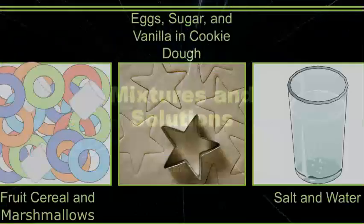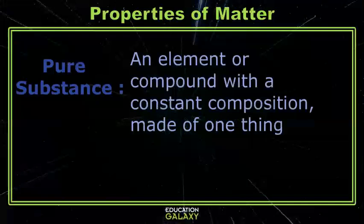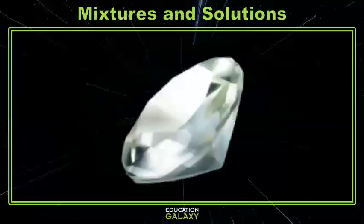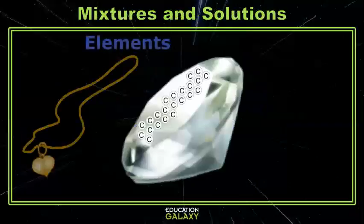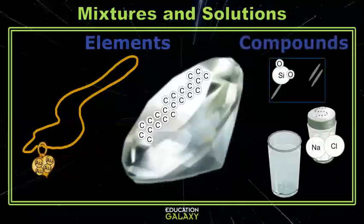Well, let's talk about mixtures and solutions to find out. Let's start by defining things that aren't mixtures. Pure substances are objects that are made up of only one thing. All pure substances have a consistent composition and distinct chemical properties. It can be a single element, like a diamond made out of carbon, or it can even be a gold necklace. Pure substances can also be compounds, like a sheet of glass, salt, or even water.